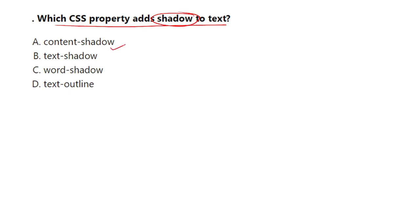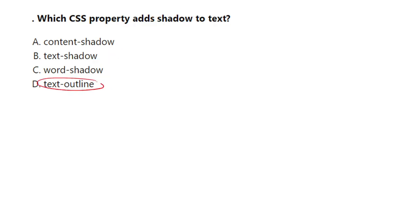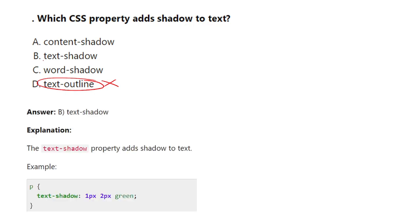The options are: content shadow, text shadow, word shadow, or text outline. Text outline is not the correct answer, so we reject that. The correct answer here is text-shadow.